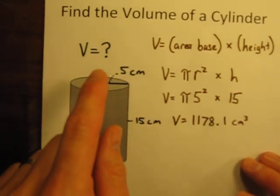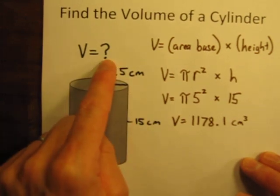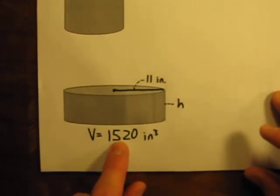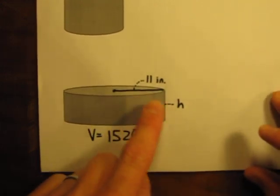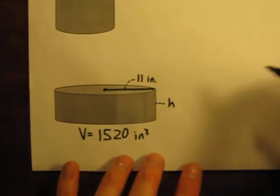Let's try a different one. This time we knew the radius, we knew the height, we were trying to calculate the volume. What if we know the volume, and we know the radius, and we're trying to find the height? Well, we can still do it, we just need to go backwards. We're going to start with our same formula.